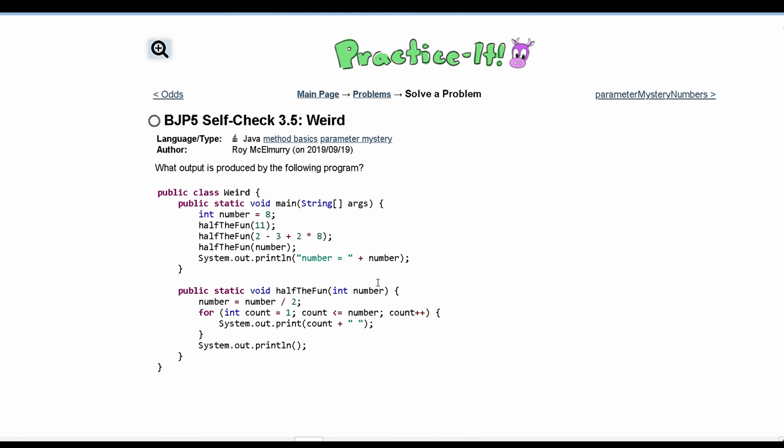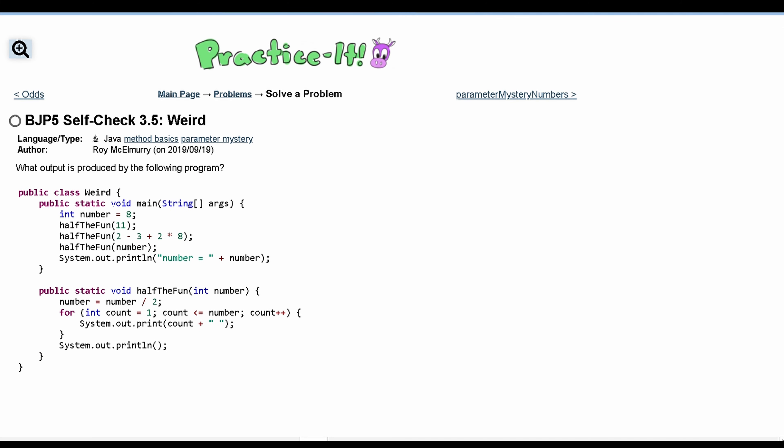So when we do this we can start by looking at what's in our main method. In this line we have our int numbers equal to 8 and that doesn't do anything for this next line which is halfTheFun(11). So we have our method which is halfTheFun and we are passing in 11 right here.